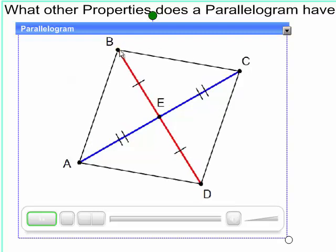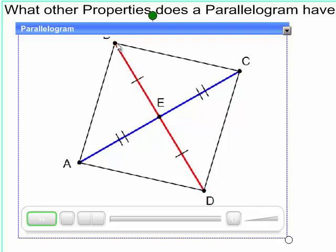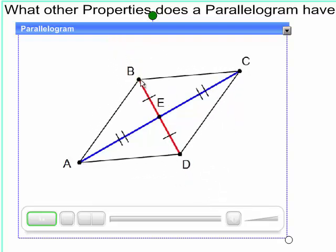You'll find out later in the chapter that the diagonals are congruent to each other if it's a rectangle or a square.